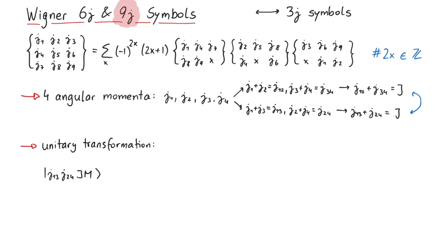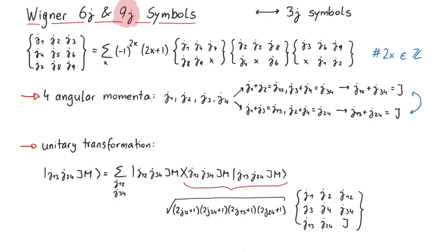If we start with j13, j24, jm, we can do a linear combination like this, where the sum goes over j12 and j34. This long bra-ket element can now be written in terms of a 9j symbol.